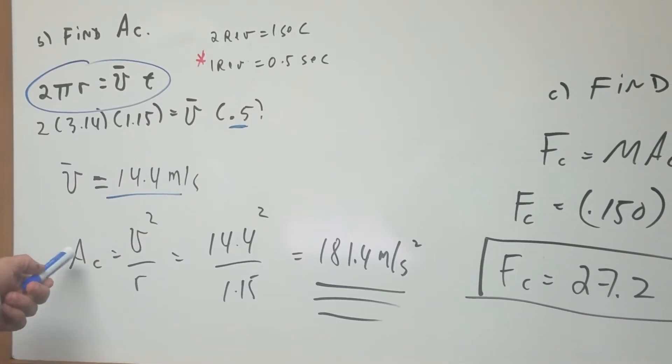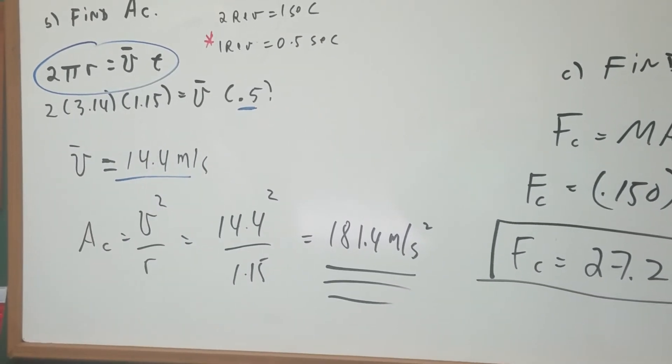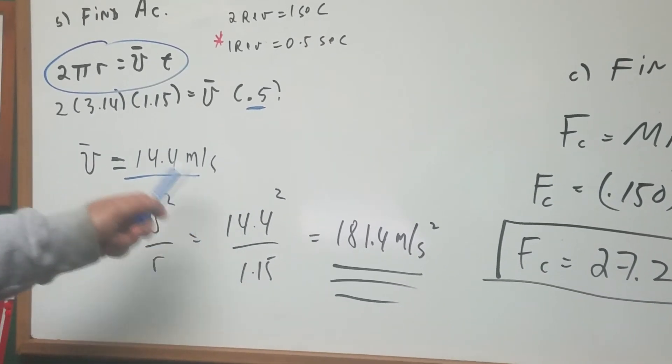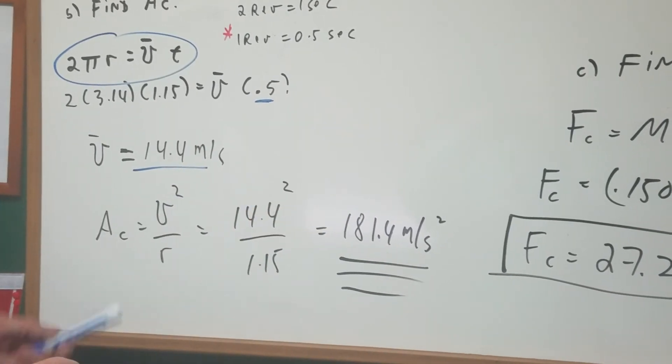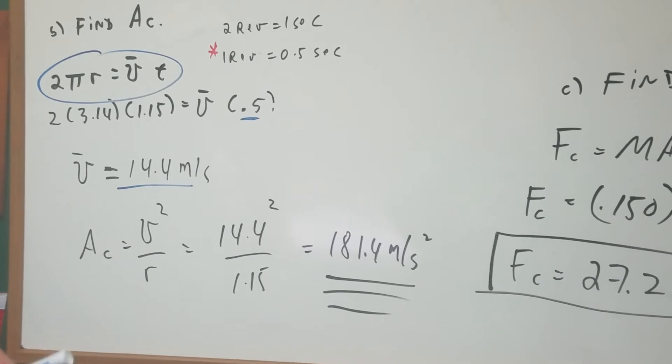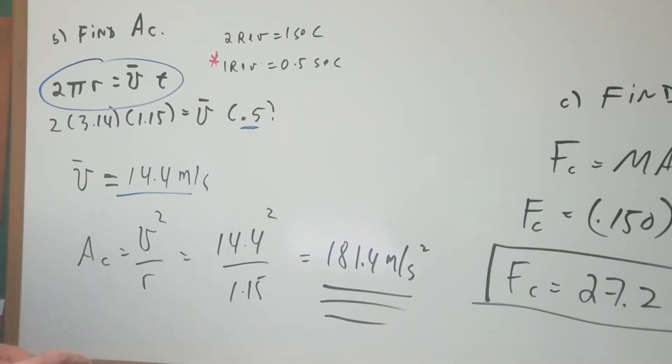Once you got the velocity, the centripetal acceleration is v² over r. We know the velocity, 14.4, and square it divided by the radius. The numbers here were done with a calculator in the OAT Destroyer book.